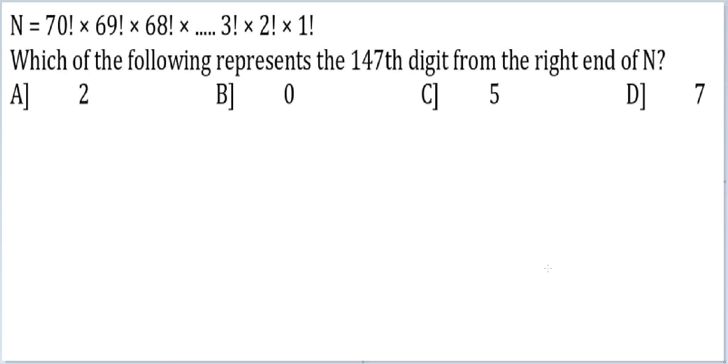Let's look at this question. N is equal to 70 factorial times 69 factorial times 68 factorial and so on, down to 3 factorial times 2 factorial times 1 factorial. Which of the following represents the 147th digit from the right end of N?